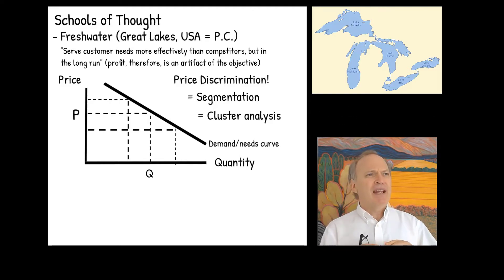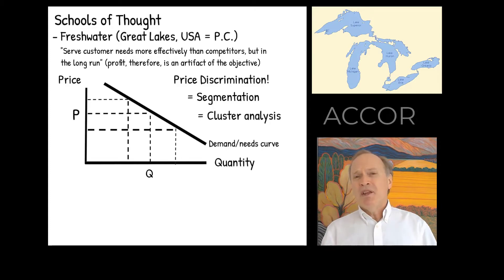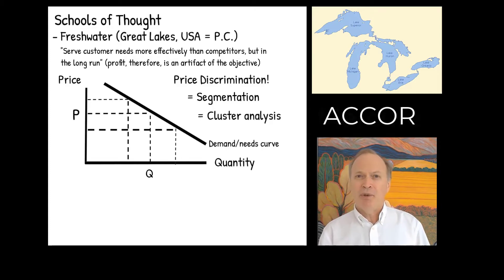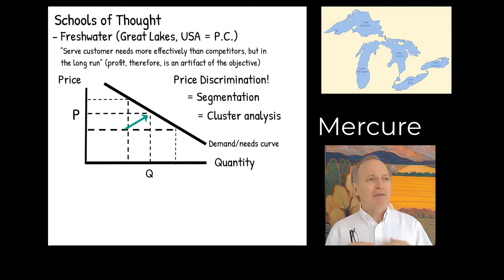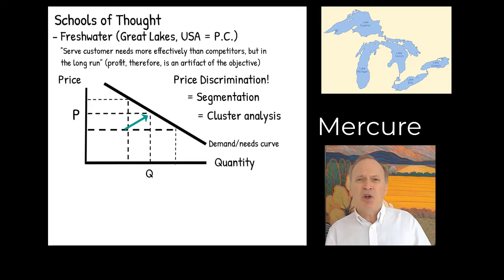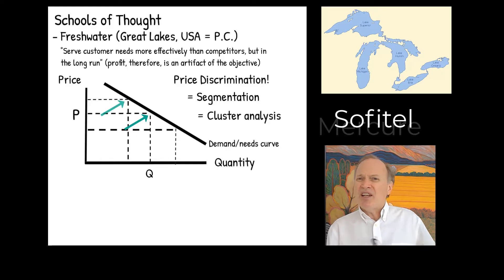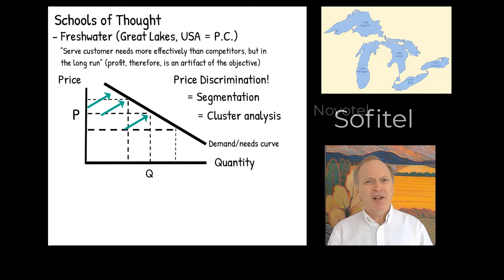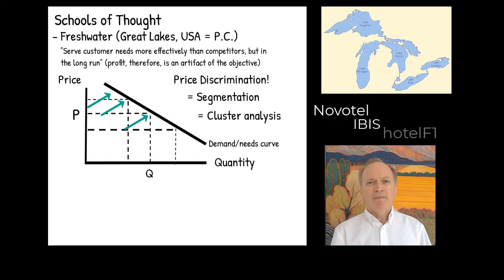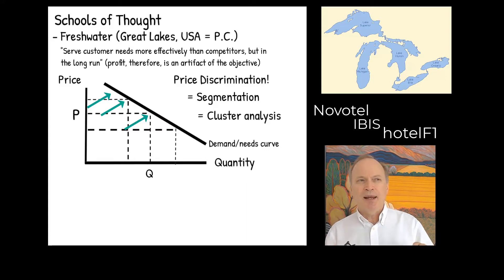Let's take an example of a company called the Accor Group. They have a hotel called the Mercure — let's say that's right there in the middle at that first price-quantity point. Have all the needs been fulfilled by that one product? No, there are people willing to pay more. Let's call that Sofitel, and then Chateau's Sofitel Demers going down the demand curve. We might have Novotel, Ibis, and then Formula One going all the way down the demand curve where people basically check themselves in — there is no labor.